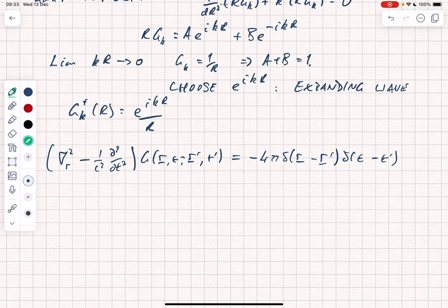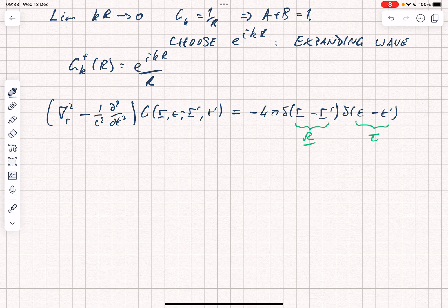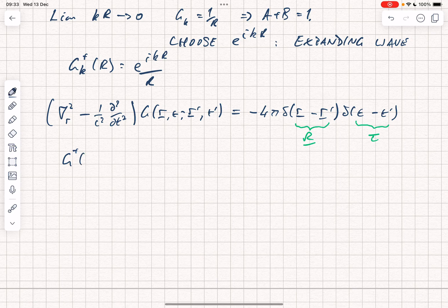Just as we've defined r minus r prime to be capital R, we're going to define t minus t prime to be tau, because these are the only things that actually are important. You can show via a Fourier transform using our gk plus of r that the solution to this equation is g plus of r t r prime and t prime.